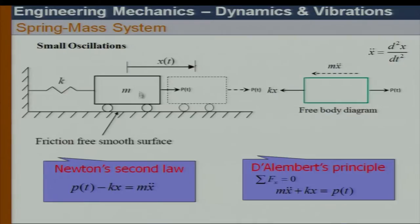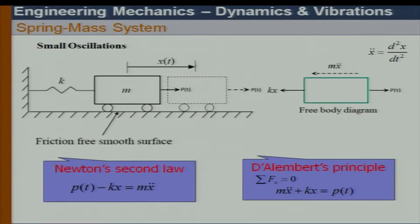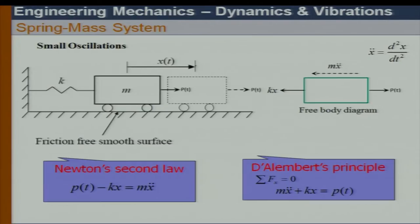Let us assume we have a mass with a spring attached, on a frictionless surface. We give it a small oscillation — if I apply a force P(t), we can talk about forced or free vibration. As per Newton's second law: P minus Kx equals mass times acceleration.